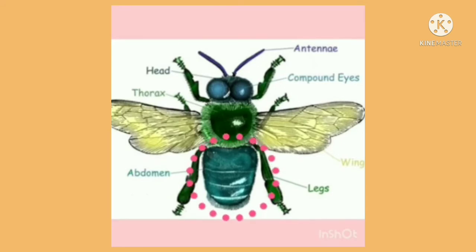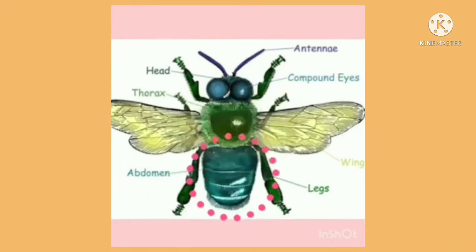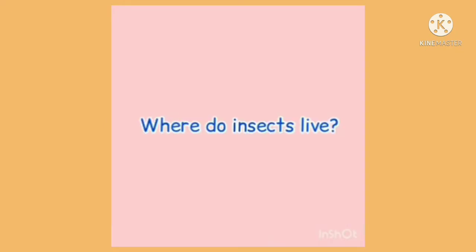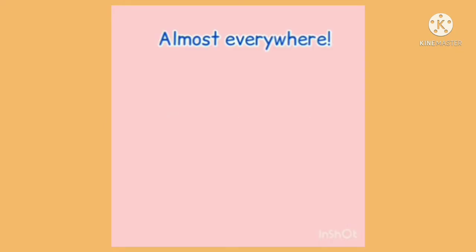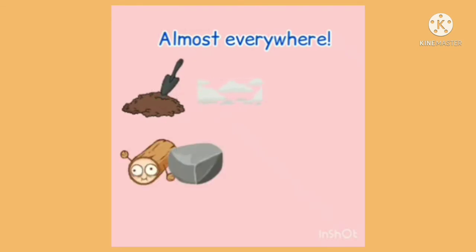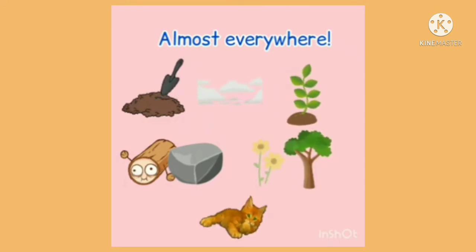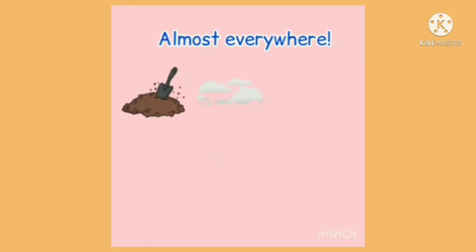An insect can reproduce by laying eggs. Now let us find out where insects live. They live almost everywhere — on the ground, on top of the ground, in the air, in the rocks, in the plants, on the trees and flowers, and even on other animals too.